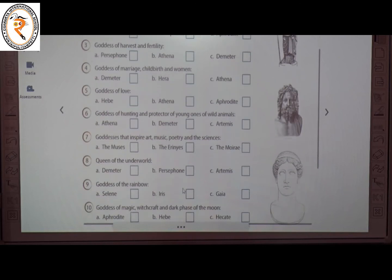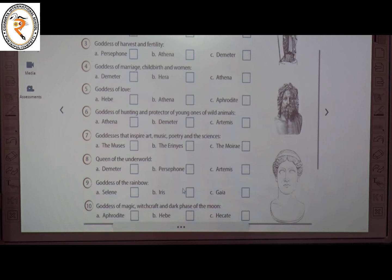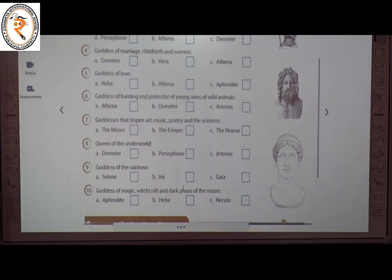The eighth one: Queen of the Underworld. The answer is B — Persephone. The ninth one: Goddess of the Rainbow. The answer is B — Iris.